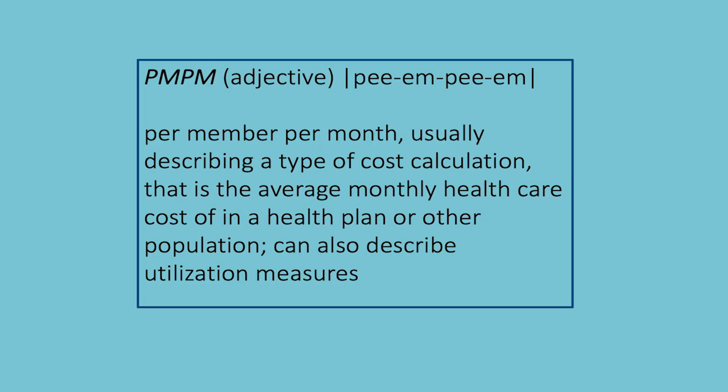Today, we're going to discuss the basic building blocks of an actuarial cost model, specifically a model that can be used to forecast the costs associated with physician office visits. Usually what you'll be aiming for in a cost model is a PMPM, or per member per month value.